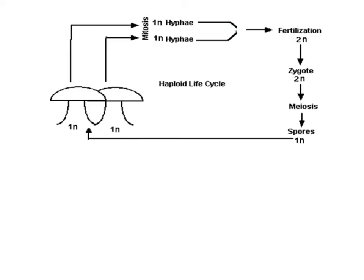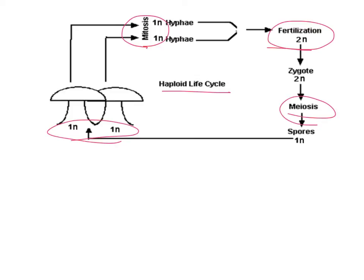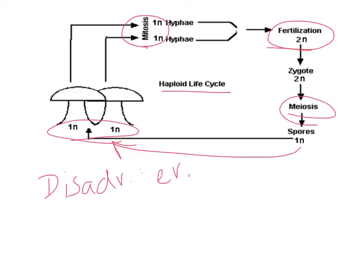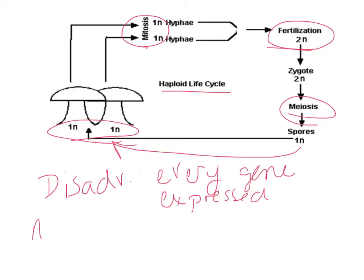Looking at the haploid life cycle, the mature organisms only have one set of chromosomes. To produce gametes that will then fertilize, they actually go through mitosis. Those cells come together to form one diploid cell, which then goes through meiosis and develops into spores that mature into the full-grown fungus. A disadvantage here is that every gene is expressed — you can't hide anything with only one set of chromosomes. An advantage, though, is that fewer chromosomes make it easier to reproduce.